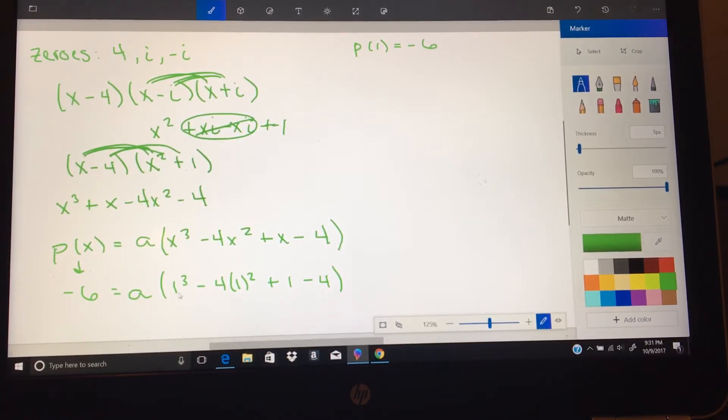So what we're going to get there is 1 cubed, that's 1 minus 4 times 1 squared minus 4 plus 1 minus 4. So 1 minus 4 is negative 3 plus 1, negative 2, minus 4, negative 6.